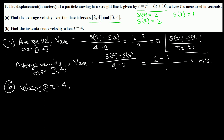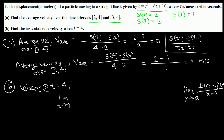The instantaneous velocity is given by the slope of the tangent line, and the formula is the limit as t approaches a of [s(t) minus s(a)] over [t minus a]. Here a is t equals 4, so we write the limit as t tends to 4 of [s(t) minus s(4)] over [t minus 4].